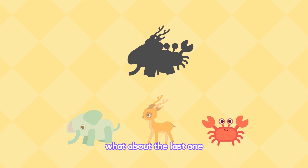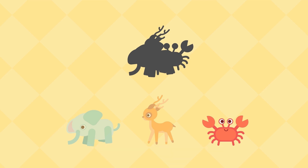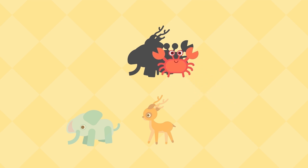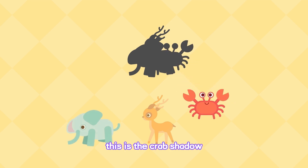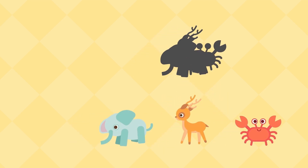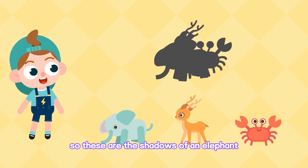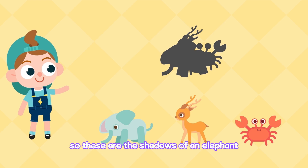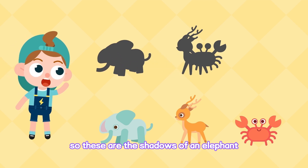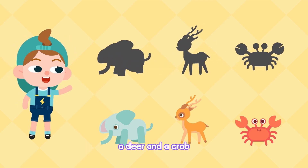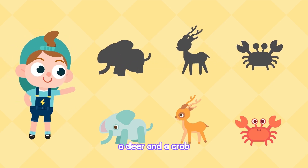What about the last one? It looks like a claw and many legs. Which animal has them? It looks like a crab — it's a crab. This is the crab's shadow. So these are the shadows of an elephant, a deer, and a crab.